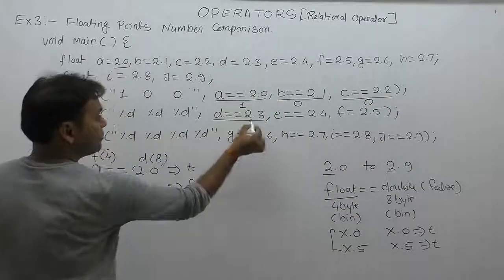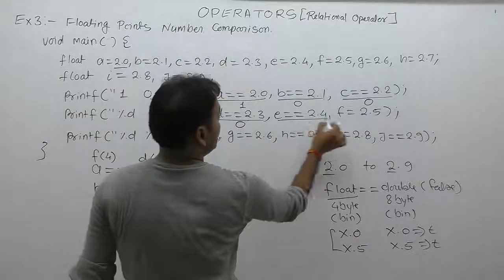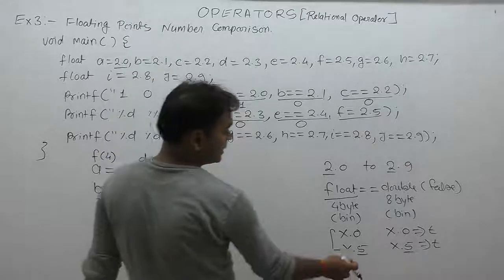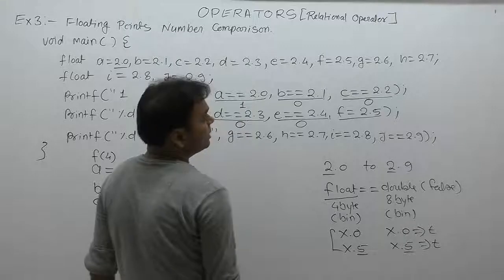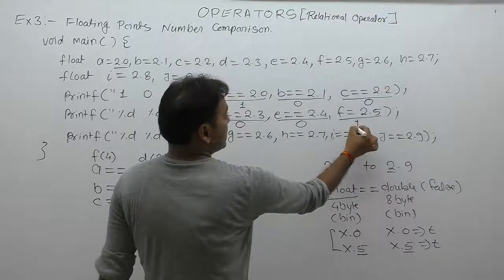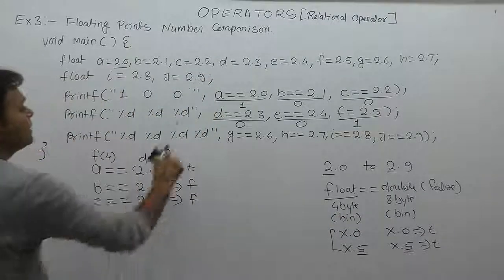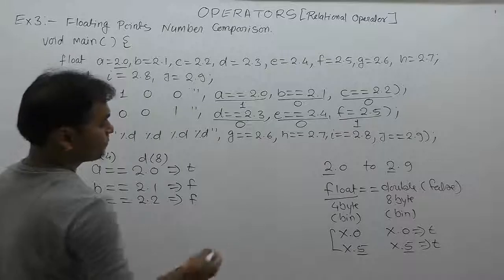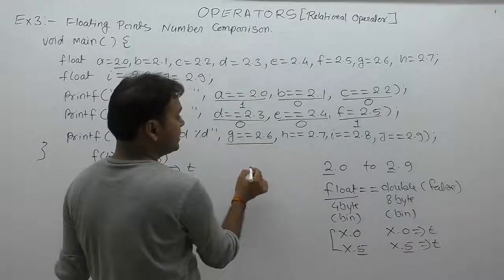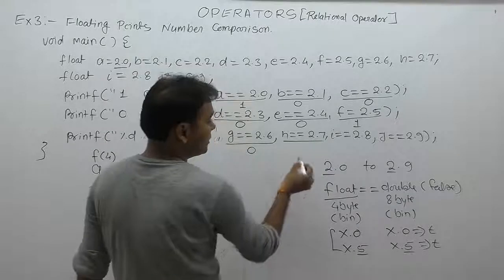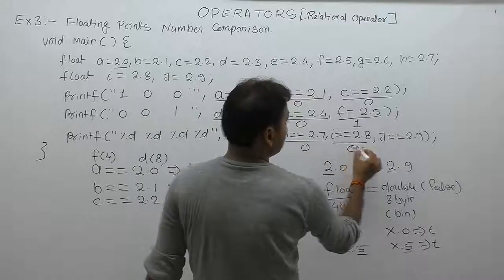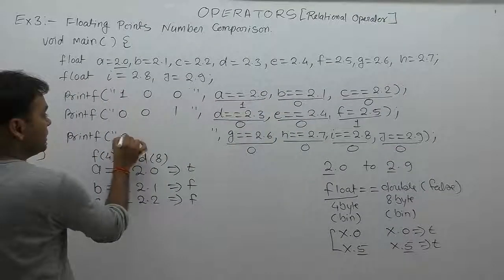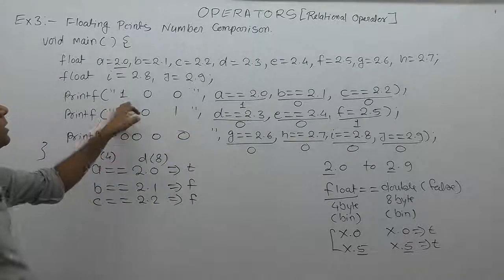Next one, checking 2.3, again false, zero. 2.4, again false, zero. 2.5, in case of 0.5, if float has same value 0.5 and integer part same, decimal part 0.5 or 0.0, then the binary representation in float and double are the same. Result is true, so one is printed. Next, 0.6, binary representation different, therefore false, zero. 2.7, zero. Similarly 2.8 and 2.9, in all cases false, therefore four times zero is printed.